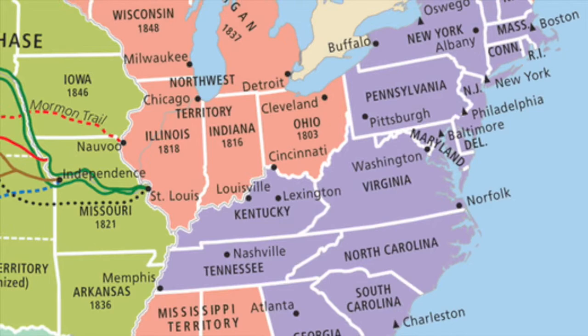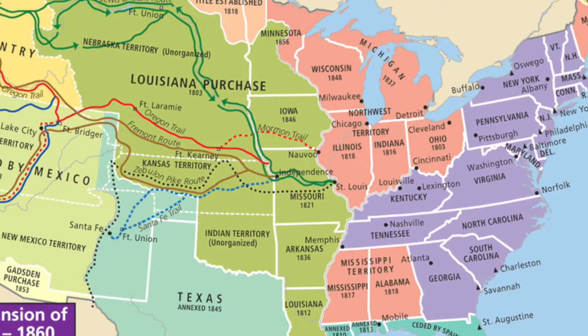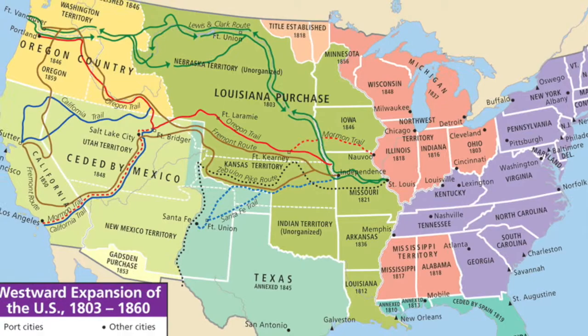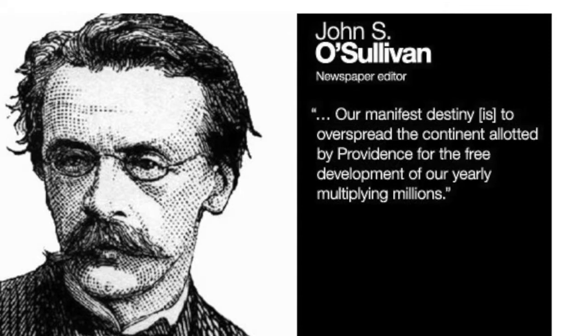As the United States expanded in the 1800s, many Americans were inspired by an idea known as Manifest Destiny. They believed that the United States had a duty to stretch westward to the Pacific Ocean and even beyond, spreading Protestant and democratic ideals across the North American continent. The phrase Manifest Destiny was introduced by journalist John L. O'Sullivan in an 1845 newspaper article.